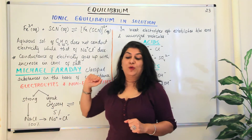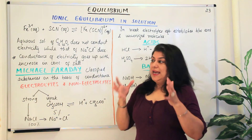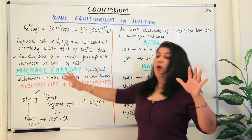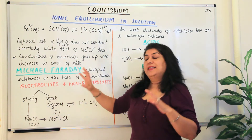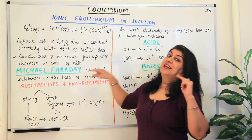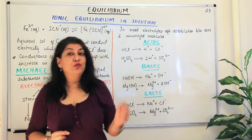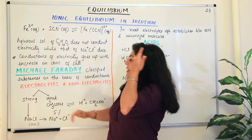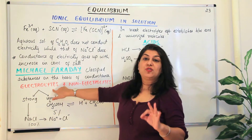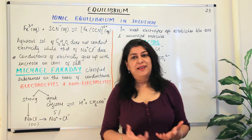Michael Faraday was a scientist who classified substances on the basis of their electrical conductance. He classified them on the basis of their conductance when present in the form of a solution, dividing them into two categories: electrolytes and non-electrolytes. Electrolytes are those compounds that conduct electricity in solution, and non-electrolytes are those substances which do not conduct electricity in solution.